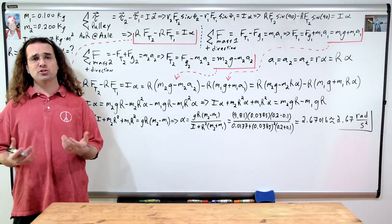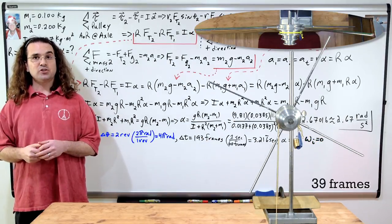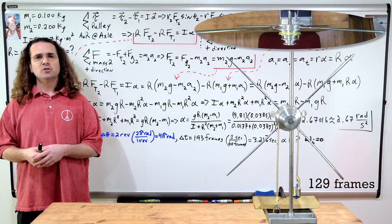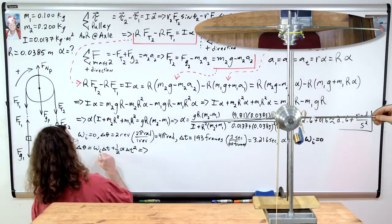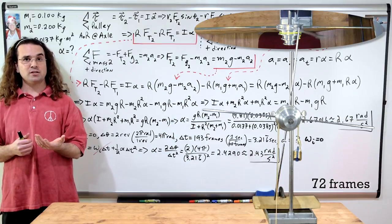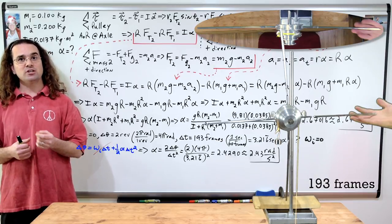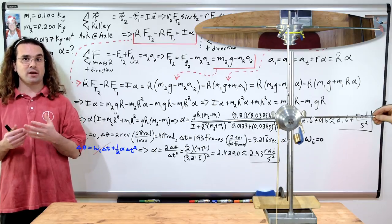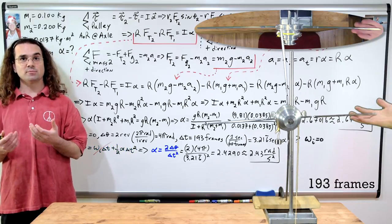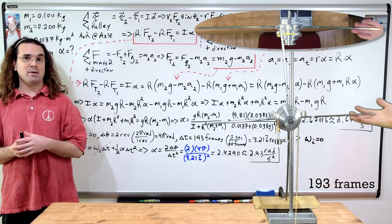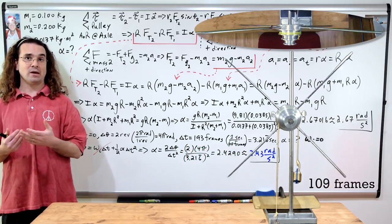Let's compare this to the measured angular acceleration. The initial angular velocity is zero, the change in theta is two revolutions or 4π radians, and the change in time is 193 frames at 60 frames per second, or 3.2167 seconds. Using the uniformly angularly accelerated motion equation with zero initial angular velocity: angular acceleration equals 2 times angular displacement divided by time squared, or 2 times 4π divided by 3.2167 squared, which equals 2.43 radians per second squared.